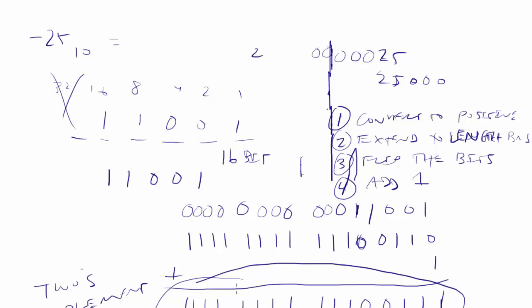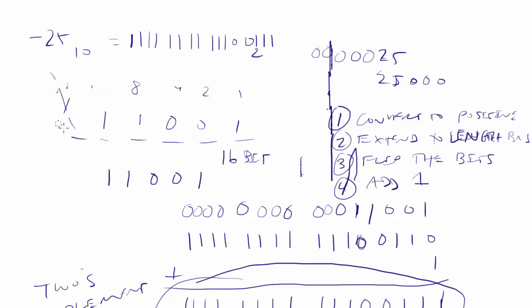So this is a negative number in 2's complement. I'm going to write it up here in our conversion. We had 1, 1, 1, 1, 1, 1, 1, 1, 1, 1, 1, 0, 0, 1, 1, 1. So that is negative 25 in binary.